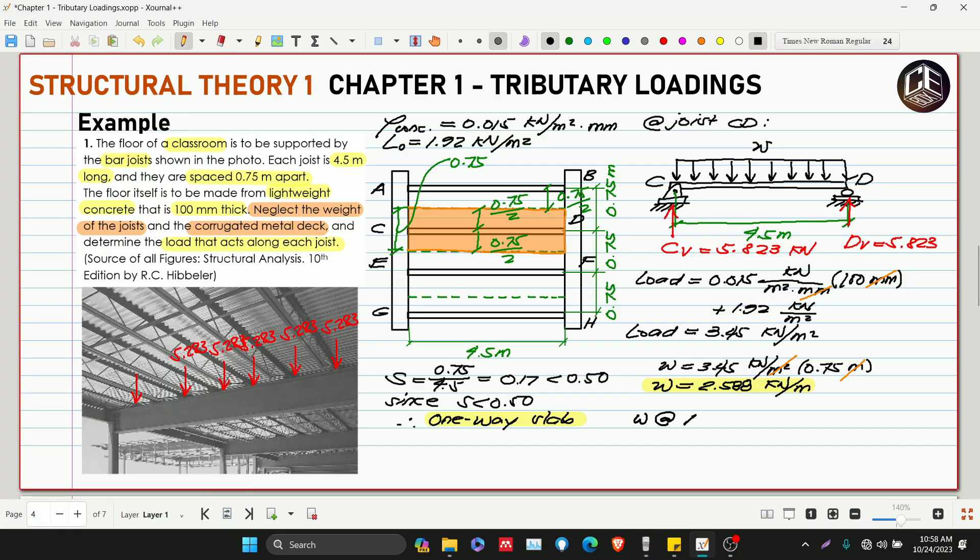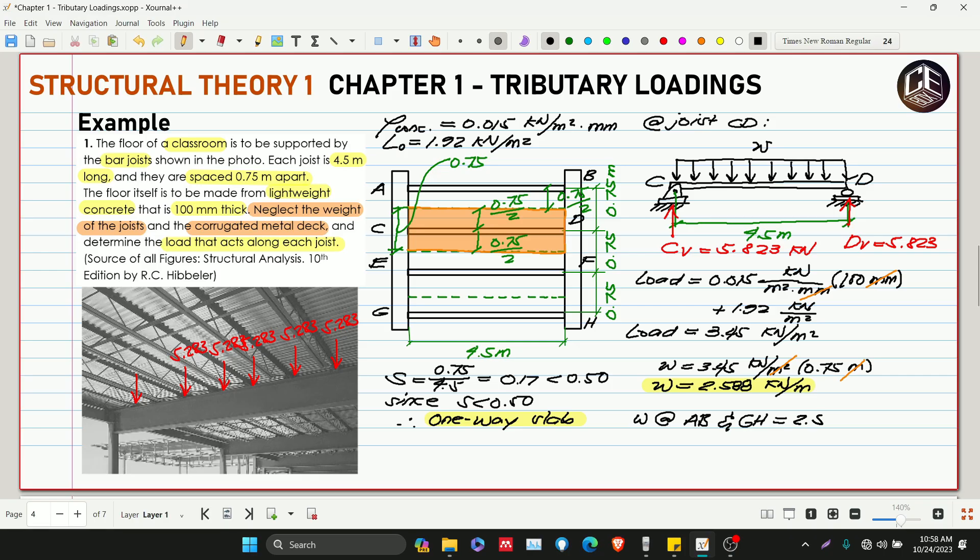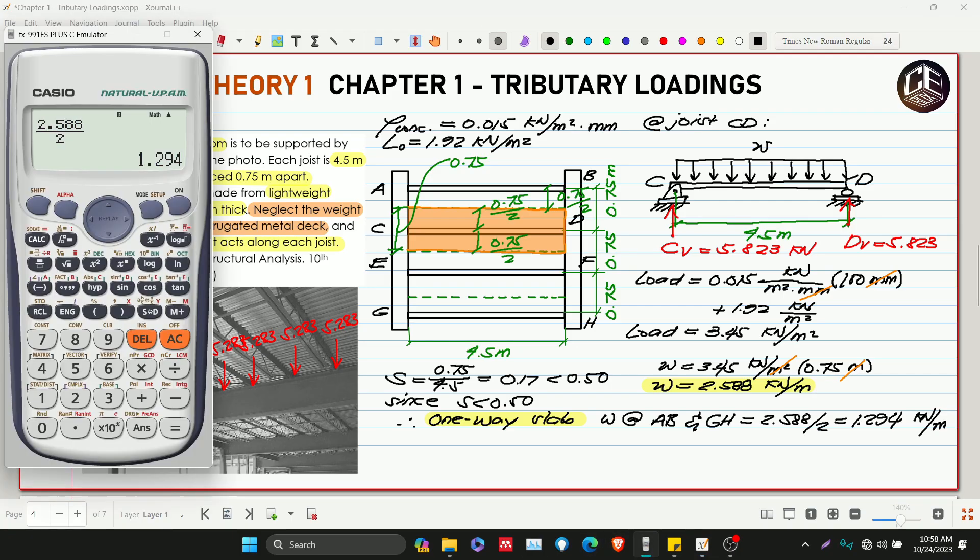W at AB and GH is equivalent to 2.588 divided by 2, which equals 1.294 kilonewtons per meter. If we solve for the reaction at A and B, it's just half the reaction at C and D, which is 5.283. So 5.283 divided by 2 equals 2.642.